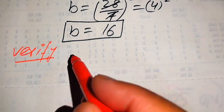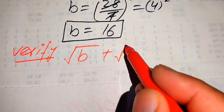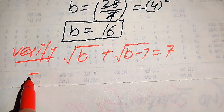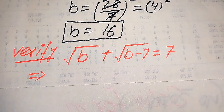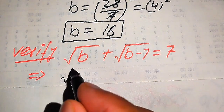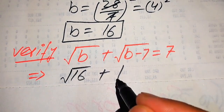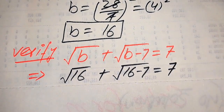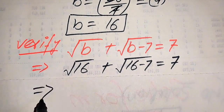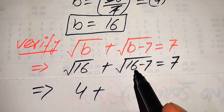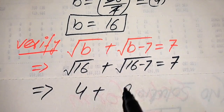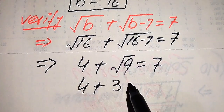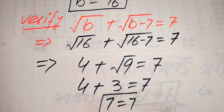In the next steps we verify that this value of b satisfies the original equation. We copy the original statement: √b + √(b−7) = 7. Substituting b = 16: √16 + √(16−7) = √16 + √9 = 4 + 3 = 7. And we get 7 = 7.